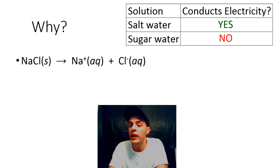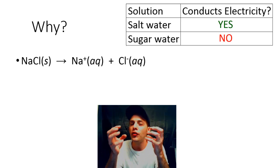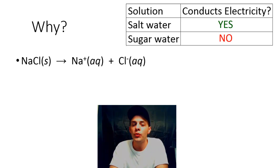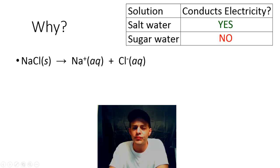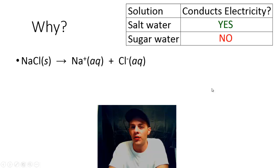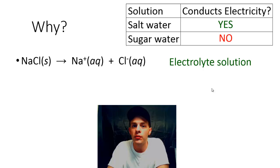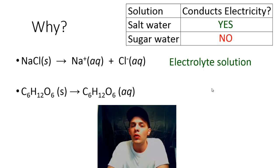In the case of the salt water, the ionic bonds holding the sodium and chloride ions together broke apart, and that released individual sodium ions and individual chloride ions floating around in that solution. These ions act as charge carriers — they act as a conductive material that allows electric current to pass through — and that's why we got that light bulb coming on. This is what we would call an electrolyte solution.